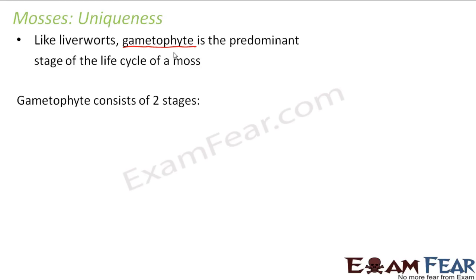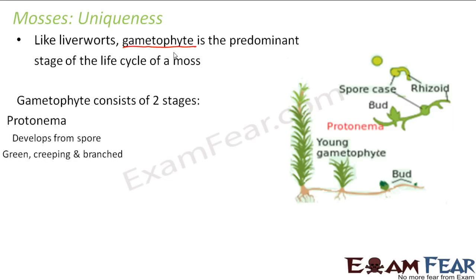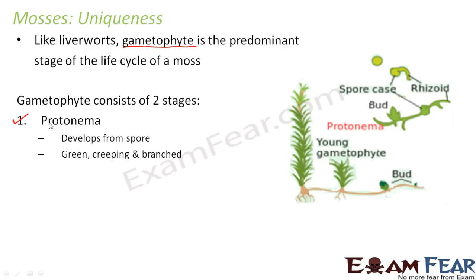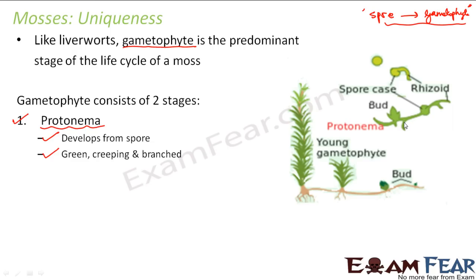But in mosses, gametophyte itself consists of two stages. In liverworts, gametophyte was just one stage — when the spores germinated, they directly formed the gametophyte. But in mosses, gametophyte is divided into two stages. The first stage is protonema. From the spore, a structure is formed which is called protonema. Protonema develops from the spore. It is green, creeping, and branched — it cannot support itself; it needs something to creep around.